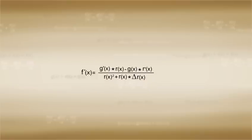And since we are interested in the change of f as it relates to the change in x, we divide both sides of the equation by delta x and we get a result that describes the relationship in terms of derivatives. That is to say that f prime x is equal to g prime x times r minus g of x times r prime x over r of x squared plus r times delta r.